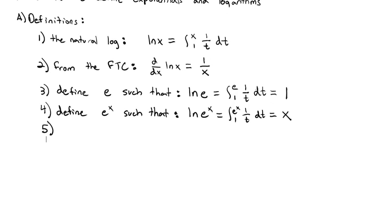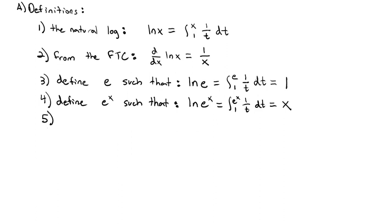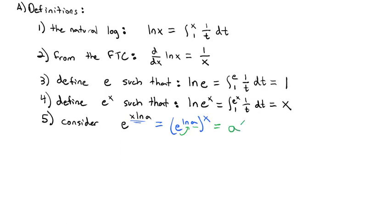This gives us a couple of additional properties we can use with our derivatives and integrals. Consider e to the x natural log of a. Our properties of exponents say this really means e to the natural log of a, raised to the x power. Because of this inverse relationship, e to the natural log of anything is just that base, so e to the natural log of a becomes simply a, and we still have the x power on the outside. In this way, we define any exponential a to the x as e to the x natural log of a.